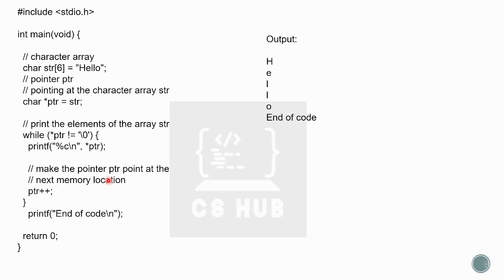Initially the pointer is set to the starting location. We use a while loop: while(*ptr != '\0'), we print the character using *ptr, then increment the pointer with ptr++. When we reach the null character, that signals the end of the string. The output is H, E, L, L, O, and then the end of the string.